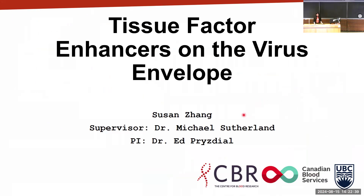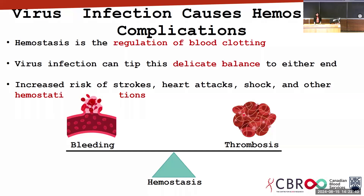My name is Susan. I had the pleasure of working in the Pryzdial lab this past summer, where my research looked at tissue factor enhancers on the viral envelope. A conserved complication across many different classes of viruses is dysregulated blood clotting. In normal human physiology we have a delicate balance between bleeding and clotting, but a viral infection can tip the scale to either end, leading to increased risk of strokes, heart attacks, shock, and other hemostatic complications.